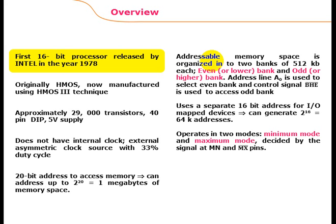The addressable memory space is organized into two banks of 512 KB each: an even lower bank and an odd higher bank. Address line zero is used to select the even bank, and the control signal BHE (active low) is used to access the odd bank. It uses 16-bit addresses for IO-mapped devices and can generate 2 to the power 16 (64 KB) addresses. The processor operates in minimum mode or maximum mode, detected by the MN/MX pin signal.